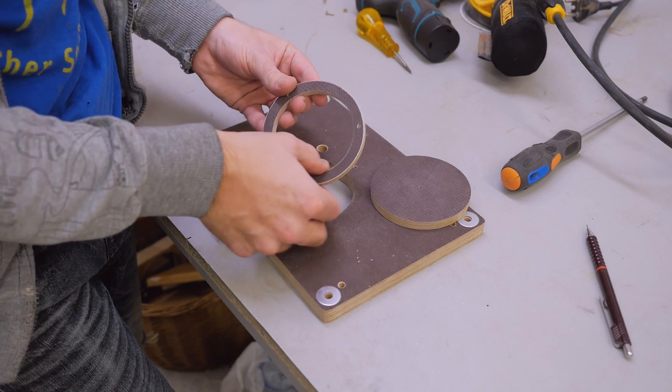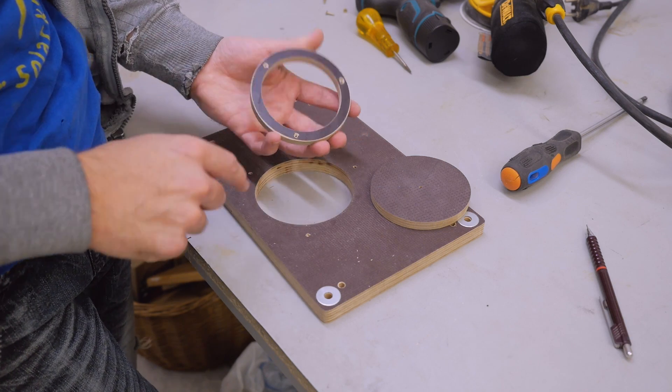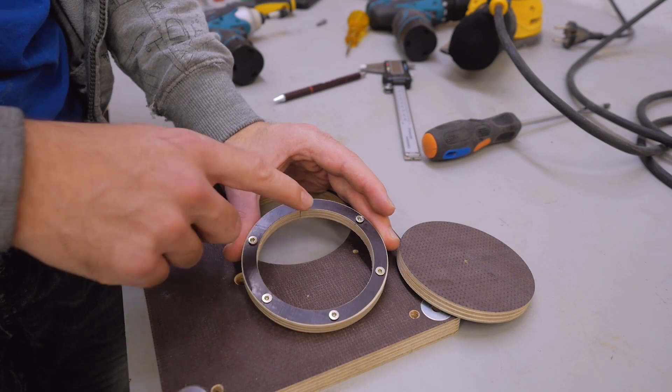Then I made it into a ring with a hole saw and then evenly spaced three holes for three adjustment screws. Just three screws were too tippy so now I installed six.